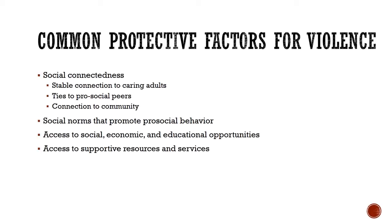In addition to the identification of common risk factors for violence, research has also identified common protective factors that are cross-cutting across the different types of violence. Those common protective factors include social connectedness—which for youth may include a stable connection to caring adults, ties to pro-social peers, and connection to community—as well as social norms that promote pro-social behavior, access to social, economic, and educational opportunities, and access to supportive resources and services.